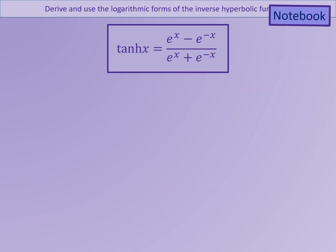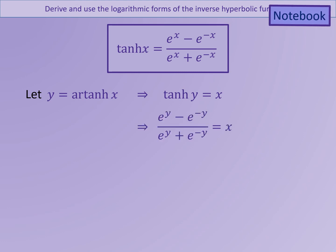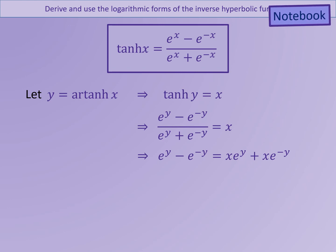Now we're going to derive a similar expression for y equals inverse tanh of x. You may want to pause the slide and try this before working through the answers. We're going to start with y equals inverse tanh of x and take tanh of both sides. We'll then express tanh y in terms of exponentials, so the left-hand side becomes e to the y minus e to the minus y over e to the y plus e to the minus y, and the right-hand side is still x. We now need to rearrange this so that y is the subject.